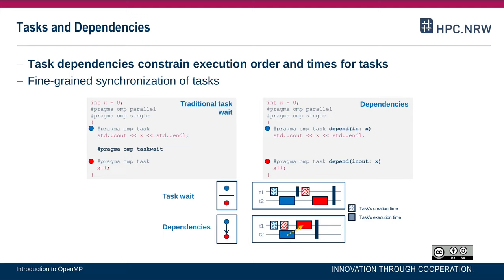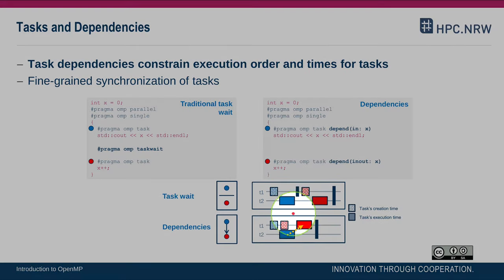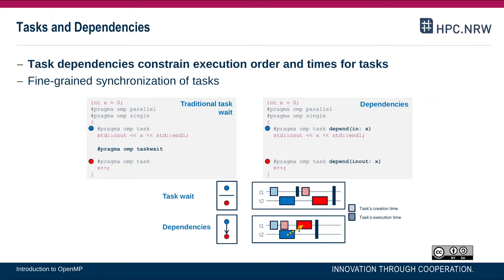I hope this gives you a rough overview of task dependencies. The key point is that unlike the strict barrier-like synchronization of task wait, tasks that do not depend on each other with respect to data flow can be executed simultaneously. With task dependencies, we can express more fine-grained synchronization than with synchronization constructs.